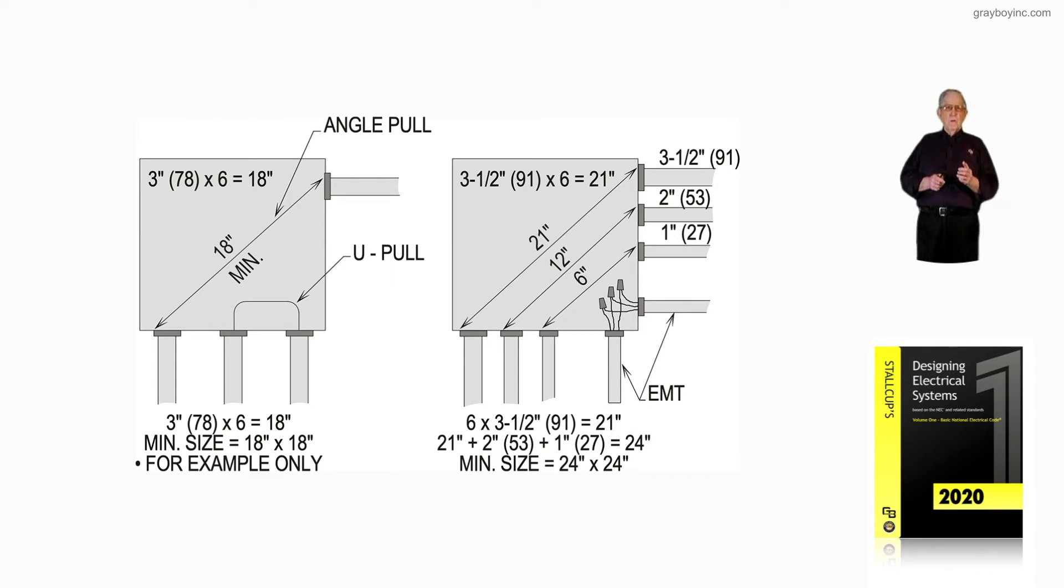So it's either angle pull or U-pull, and it's six times the largest conduit, plus the other conduits on a wall if they're present, such as the illustration to the right illustrates.